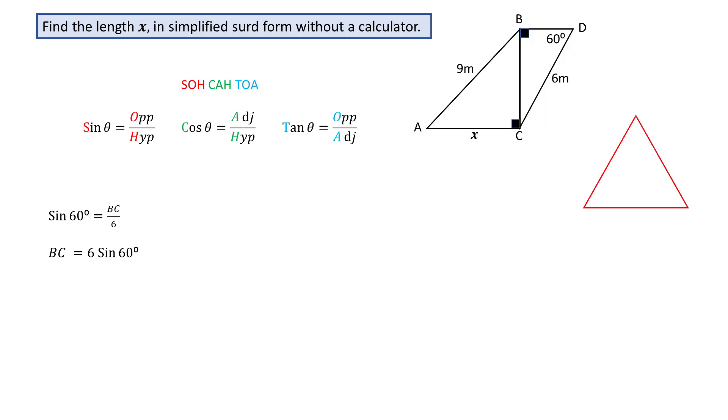We can calculate the value of sin 60 by using an equilateral triangle with its angles of 60 and sides of 2 units. Any length will do, but 2 is the simplest to work with. Draw a line of symmetry to obtain 2 congruent triangles.